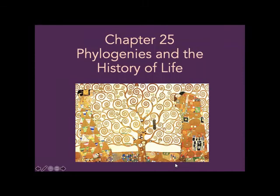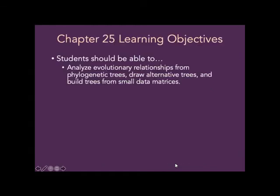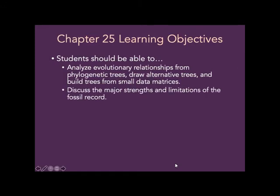Hey there! Welcome to Chapter 25, Phylogenies and the History of Life. By the end of this chapter, you should be able to analyze evolutionary relationships by looking at evolutionary trees, draw alternative trees that mean the same thing, and build a tree from a small data matrix.